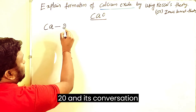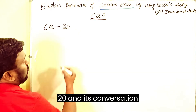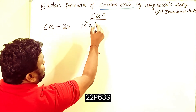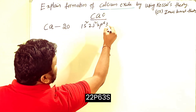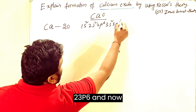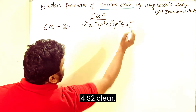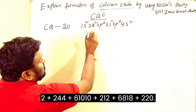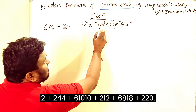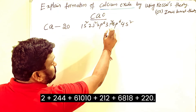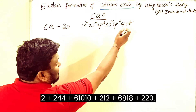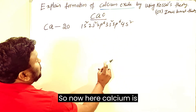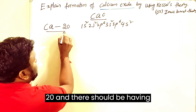The electronic configuration of calcium is 1s² 2s² 2p⁶ 3s² 3p⁶ 4s². That gives us 2+2=4, 4+6=10, 10+2=12, 12+6=18, 18+2=20 — so calcium has atomic number 20.